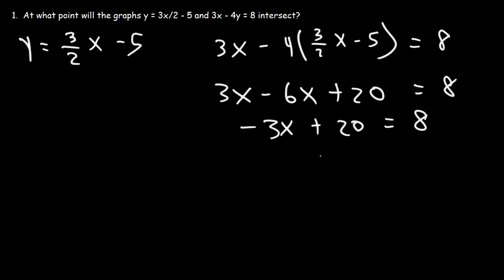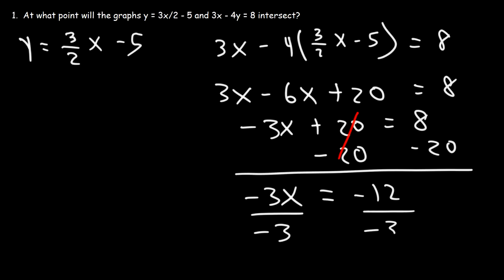Our next step is to subtract both sides by 20. So we're going to get negative 3x is equal to 8 minus 20, which is negative 12. Now let's divide both sides by negative 3. Negative 12 divided by negative 3 is positive 4. So we have the x-coordinate of the point of intersection.